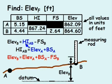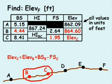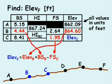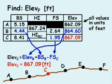We can use this equation to find the elevation at point C by knowing the elevation at point B, the backsight to point B, and the foresight to point C. The elevation at point C equals 867.09 feet.